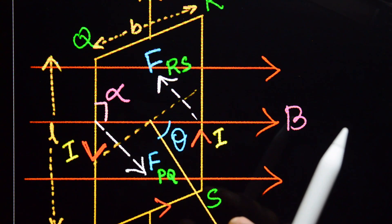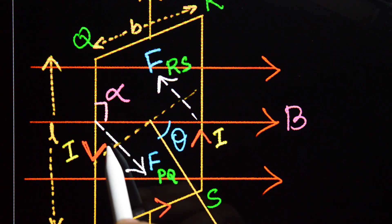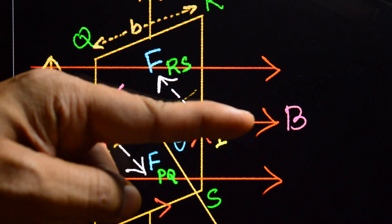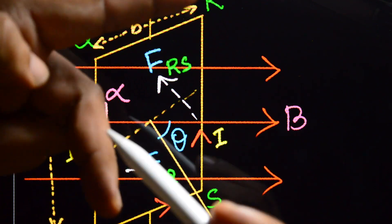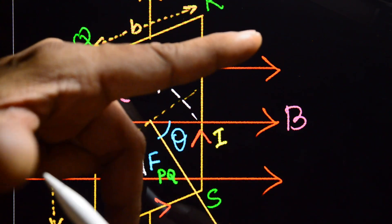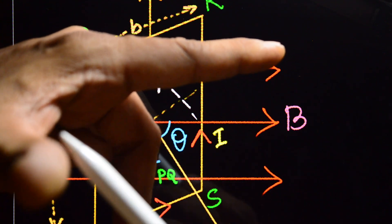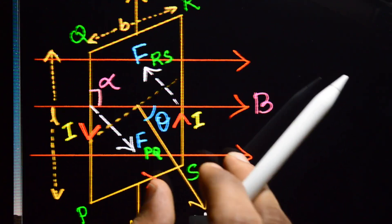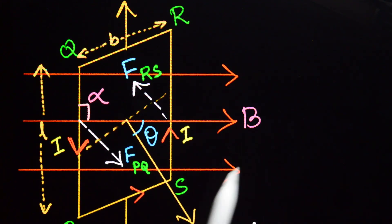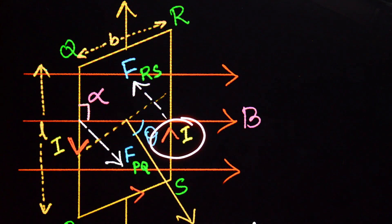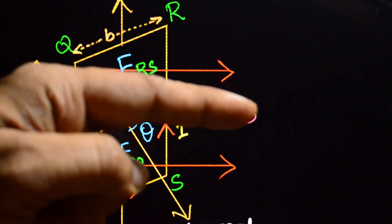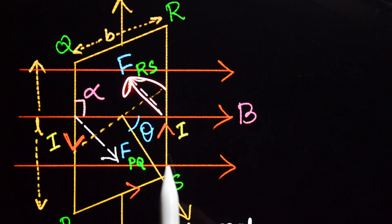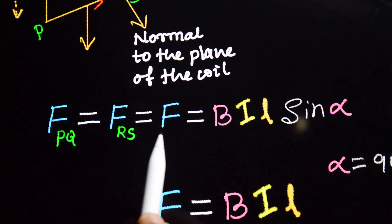When a current-carrying conductor is placed in a magnetic field, it experiences a force given by Fleming's Left Hand Rule. The middle finger shows the direction of current flow through PQ, and the thumb indicates the direction of force experienced by the conductor. Side PQ experiences force F_PQ in this direction. Similarly, side RS carries current in the opposite direction, and by the same rule, experiences force F_RS.